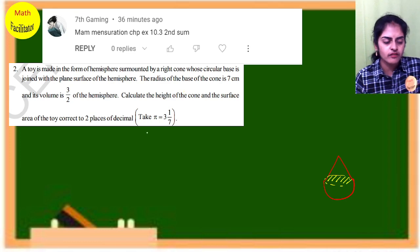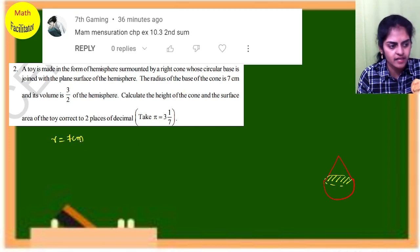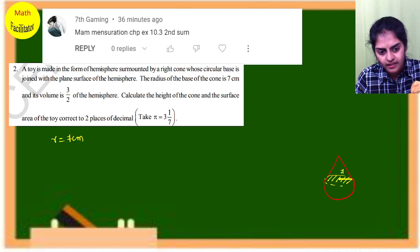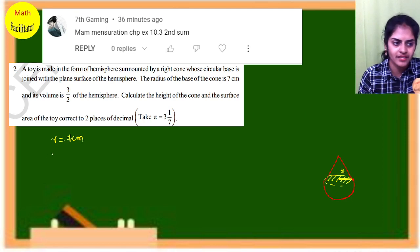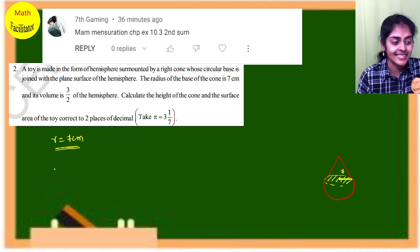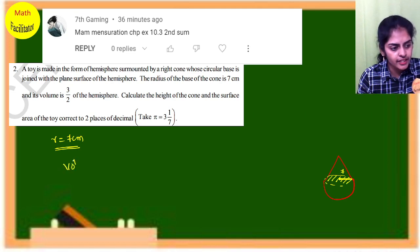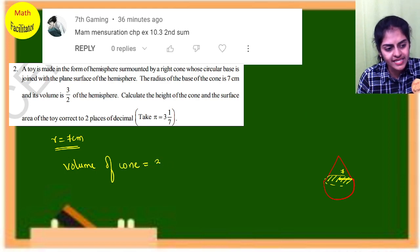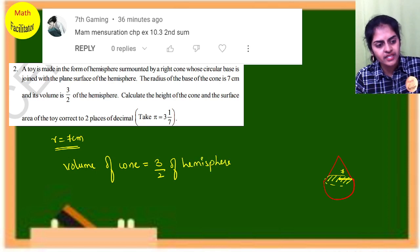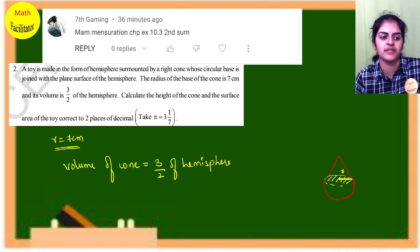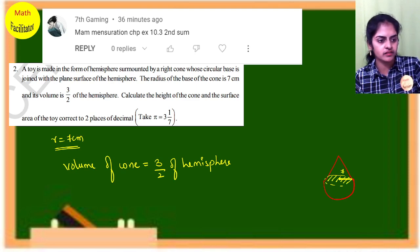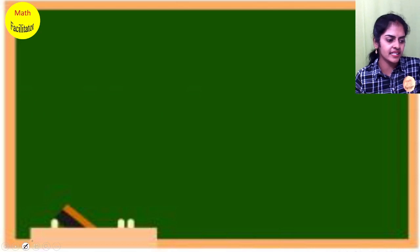The radius of the base of the cone is given as 7 cm, so the radius of the hemisphere is also 7 cm. The next important point: the volume of the cone is 3/2 of the hemisphere. So how can I write this?